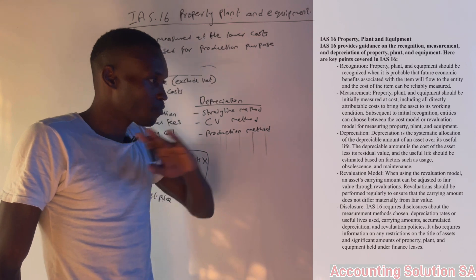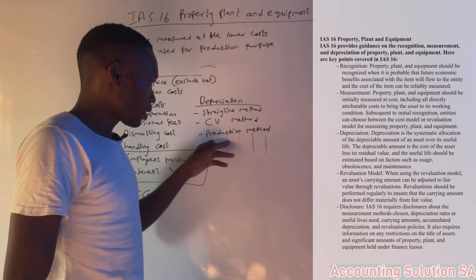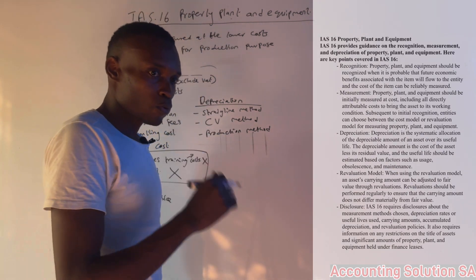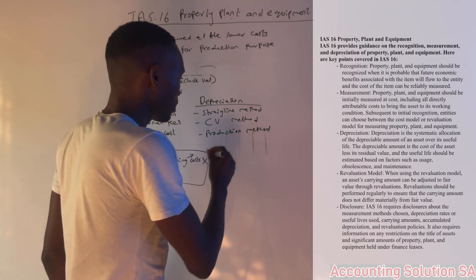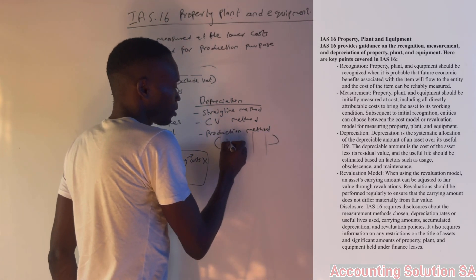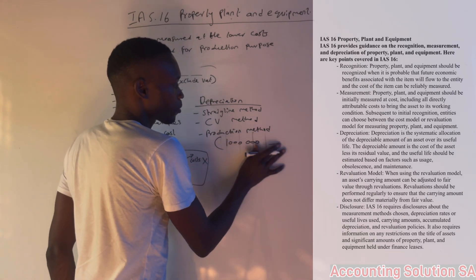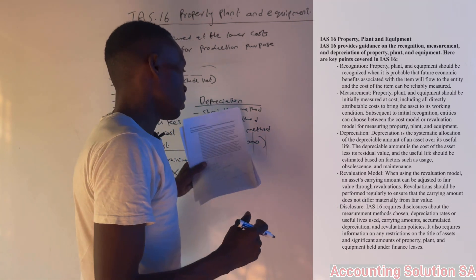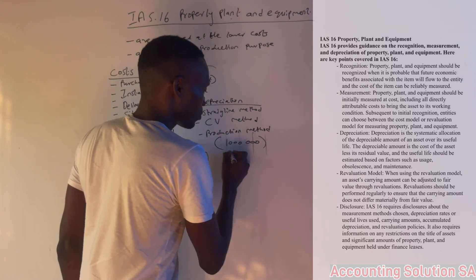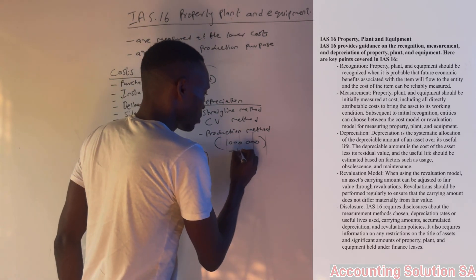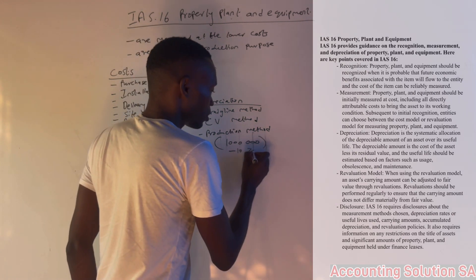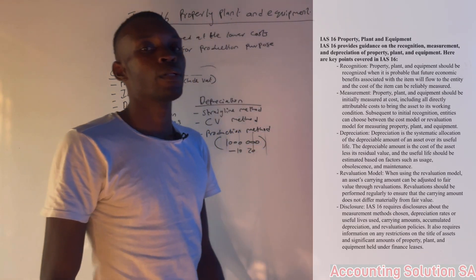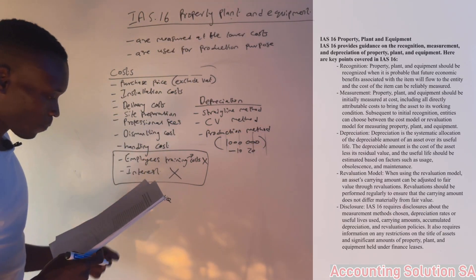With the straight-line method, every year you calculate using the same cost. With the production method, for example, if we purchase a machine estimated to produce one million loaves of bread, every time we produce bread we subtract proportionally — if we produce 10 today, depreciation corresponds to 10; if 20, then 20 — and so on until we complete the total estimated production.